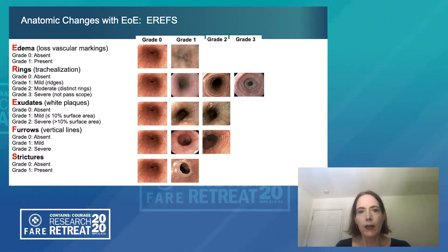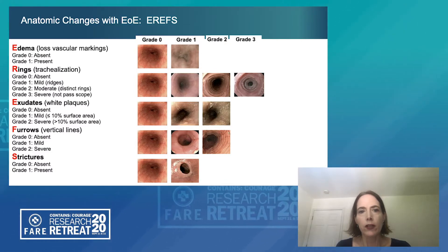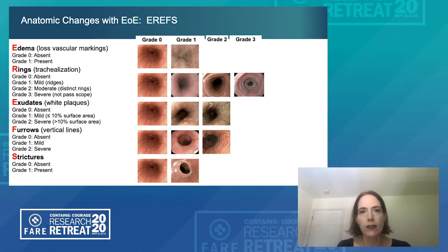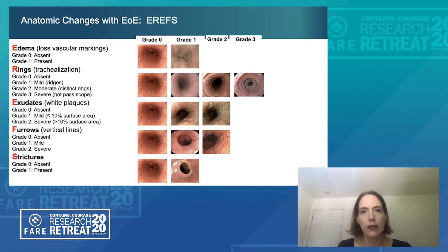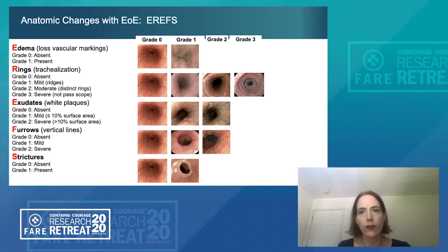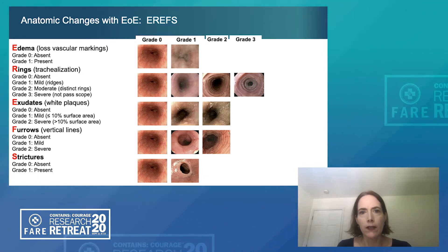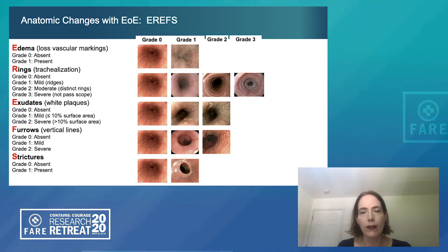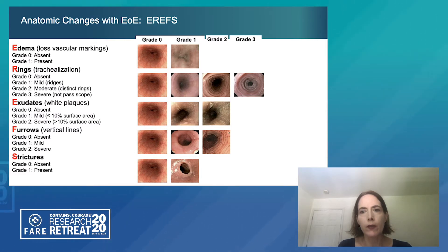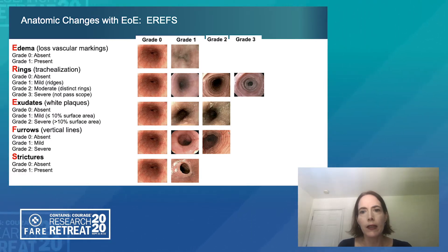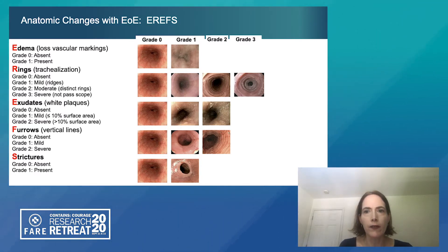There are several gross anatomic features that characterize this disease: edema, rings, exudates, furrows, and strictures — known by the acronym EREFS. This slide demonstrates the progressive changes that occur over time with respect to these features, and ultimately the fibrostenotic characteristics of disease — the rings and the strictures — which will develop if left untreated.